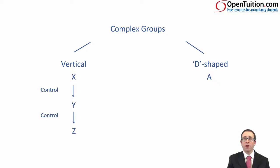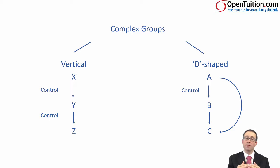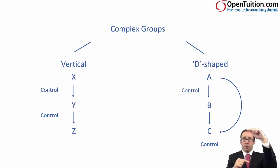With a D-shaped group, we have a company A which has control of company B. Then there's an investment in another company C. But instead of just B having the investment in C, A will also have some form of investment in C. By combining the ownership that A has in C and the ownership that B has in C, that should give us control over C — so again we have a parent, a sub, and a sub-sub. Because the parent owns shares in the sub-subsidiary, we have a D-shaped group.